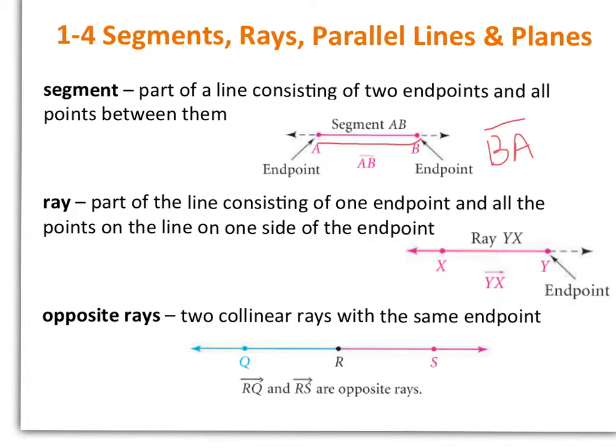A ray is a part of a line consisting of one endpoint and all the points on the line on one side of the endpoint. So a ray, when you denote it, it starts with the endpoint. So at the example on the right, this is ray YX. I cannot reverse it because it's saying we start at Y and we go over to X. And then opposite rays are two collinear rays with the same endpoint. So ray RQ and ray RS are considered opposite rays.